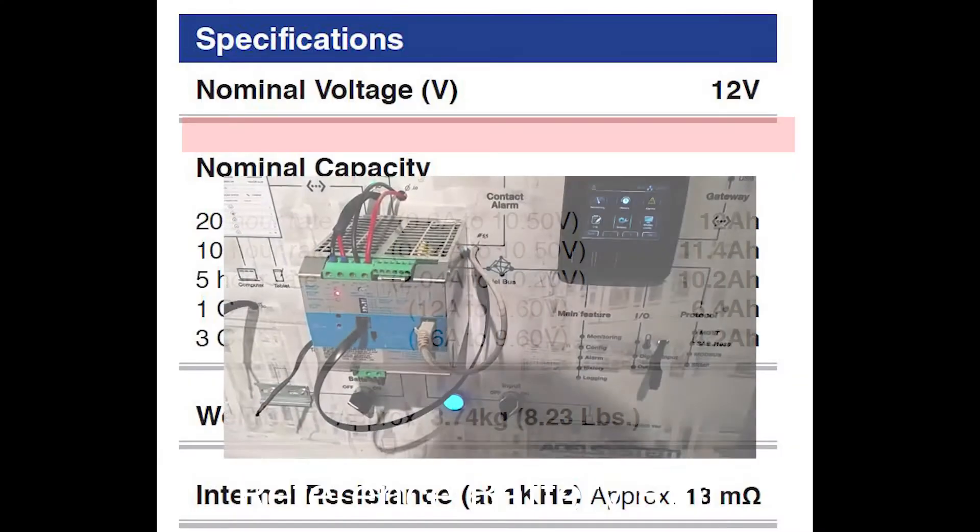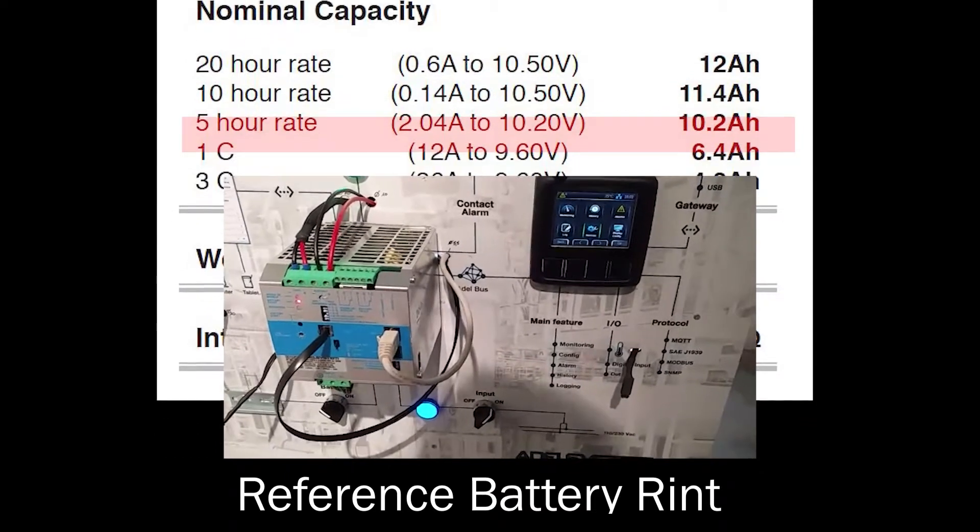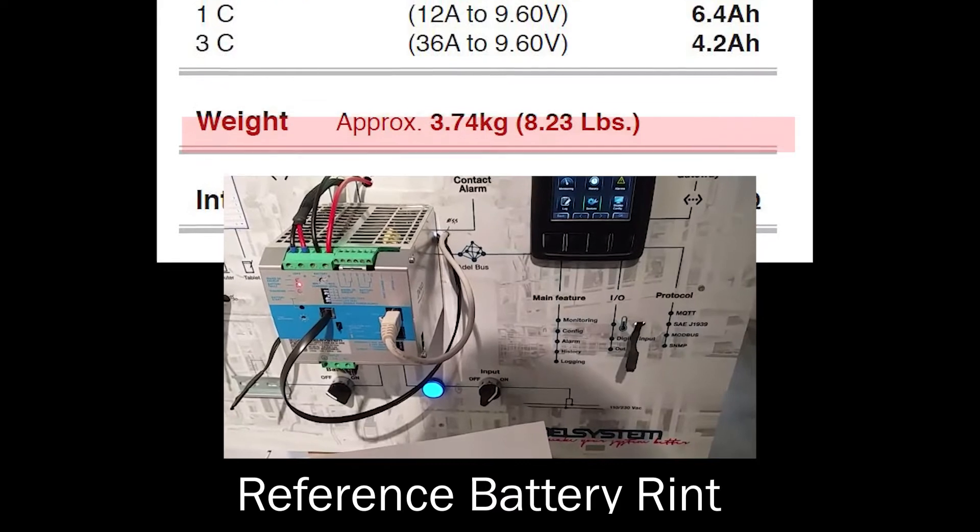In order to have the right value of state of health, you have to set up the right value of internal resistance, reference internal resistance.